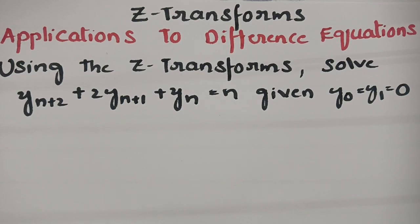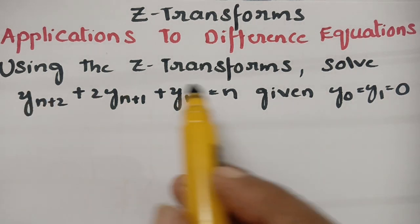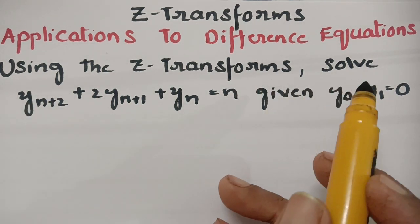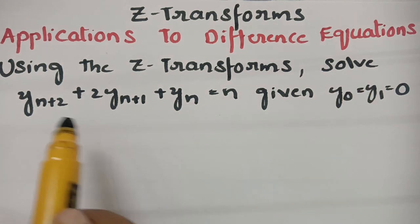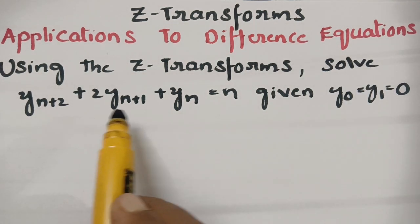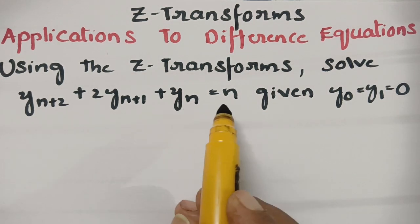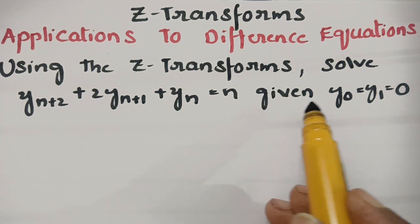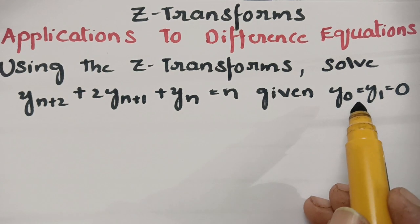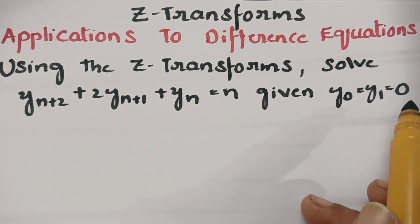Today's video is on applications to difference equations. This topic is from Z transforms. In today's video I am going to solve a problem: using Z transforms, solve y(n+2) + 2·y(n+1) + y(n) = n. The given conditions are y(0) = 0 and y(1) = 0.